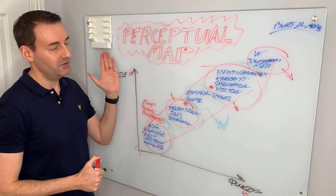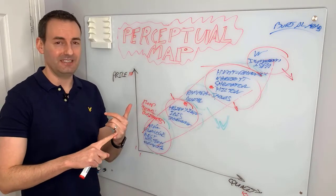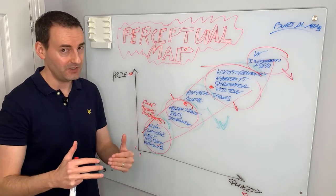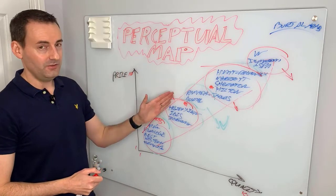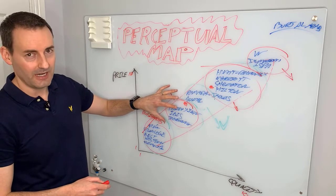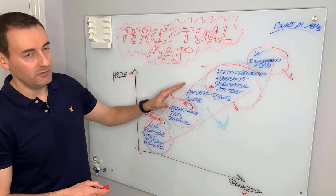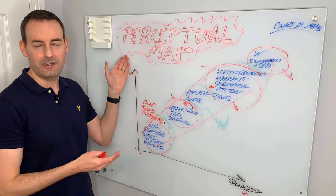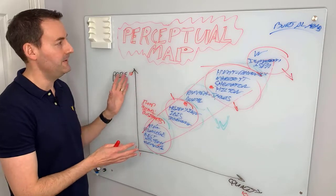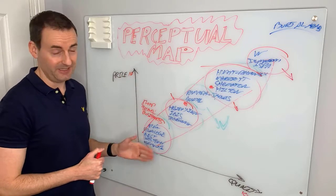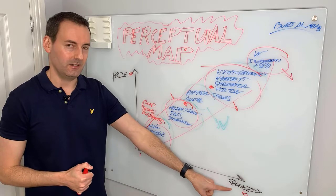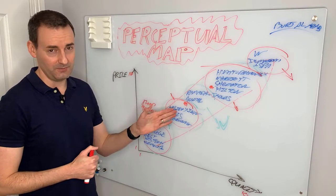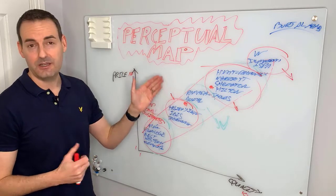So that is the perceptual map. It's super useful for number one: mapping where you currently are; number two: checking whether that aligns with your teams; and number three: checking whether it aligns with your customers. Once you know those things, you can decide how to grow — whether to go deeper in your current segment or move up or down, and whether your brand can stretch that far. This analysis sits within both your marketing plan and your brand plan.